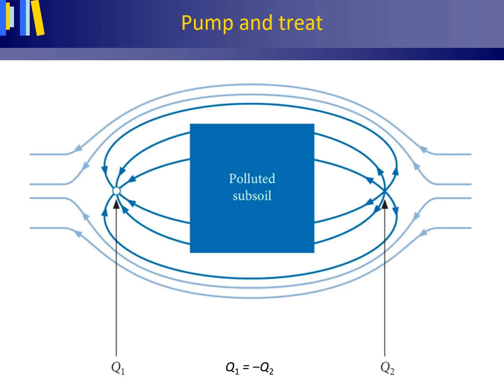Good use can be made of a recharge well and pumping well to hydrologically isolate and treat polluted subsoil, a process generally known as pump and treat. This figure shows pump and treat — the hydrological isolation of polluted subsoil by a pumping well indicated with a small circle with discharge Q1 to the left, and a recharge well to the right with recharge Q2.